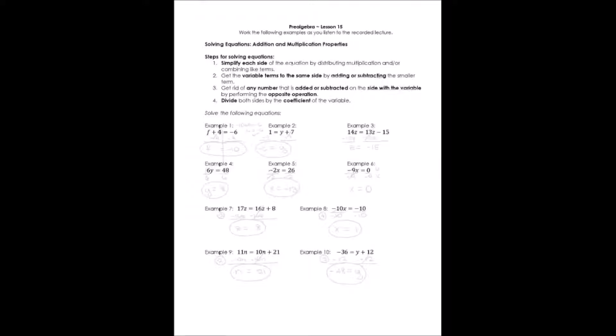The first step, we first have to simplify each side of an equation. Remember, an equation is split into two sides by the equal. So we simplify each side of the equation. And how do we do it? We distribute multiplication and we combine like terms on each side.